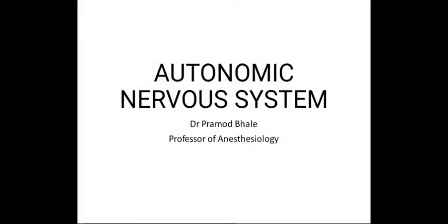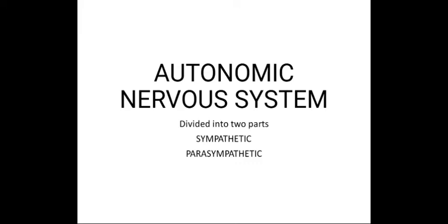Hello students, today we will discuss the autonomic nervous system. The autonomic nervous system is divided into two parts: the sympathetic system and the parasympathetic system. The autonomic nervous system is a network of nerves and ganglia that controls involuntary physiological actions, and it maintains internal homeostasis and stress responses.